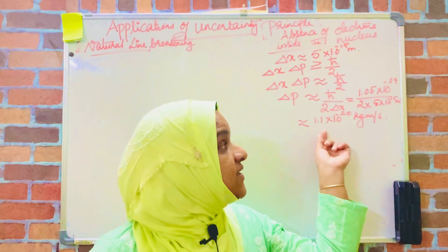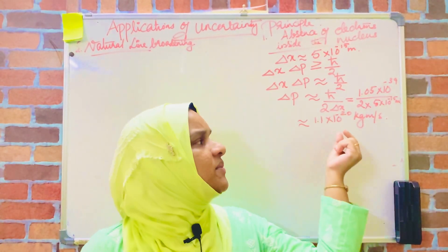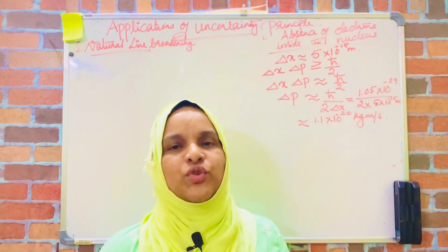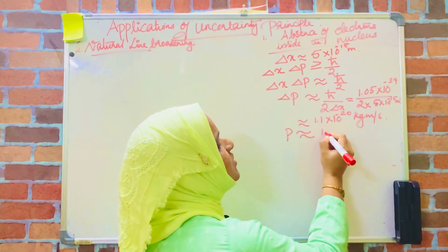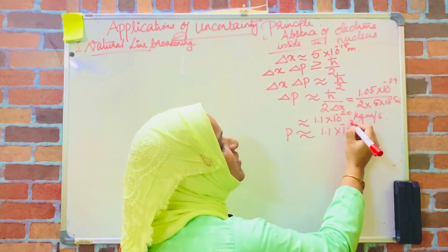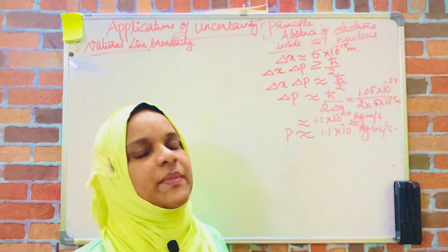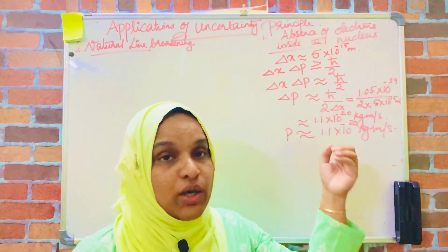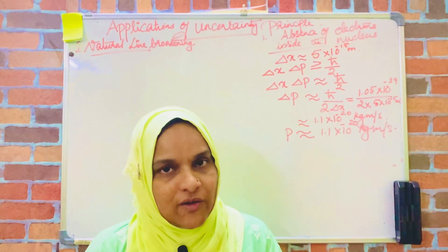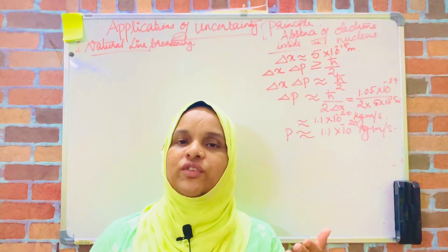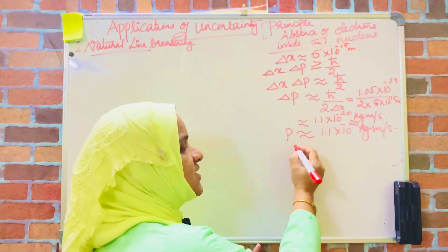This is the uncertainty in momentum. If the uncertainty in momentum is of this order, the momentum itself should be of approximately the same order — 1.1 into 10 raised to minus 20 kilogram meters per second. If a particle has such a high momentum, its velocity should be comparable to the velocity of light, and therefore the total energy of the particle should be calculated using the relativistic expression.